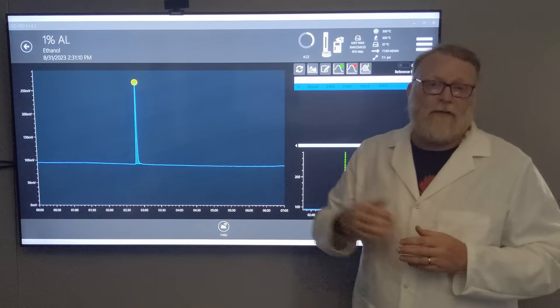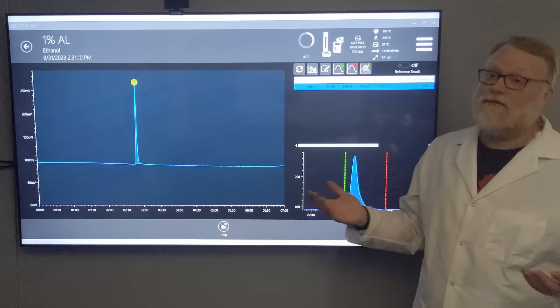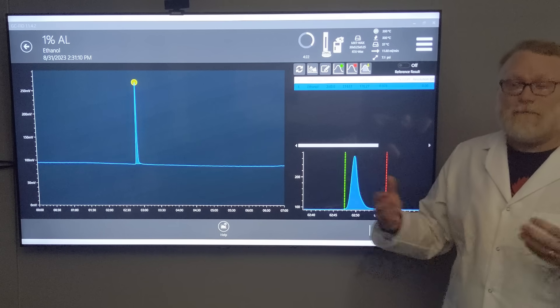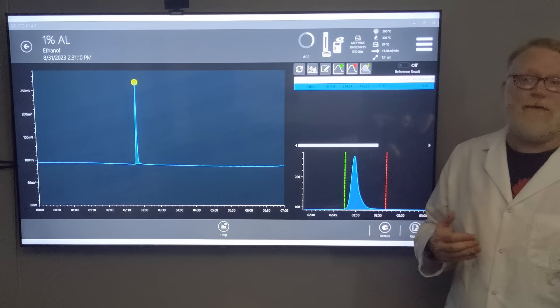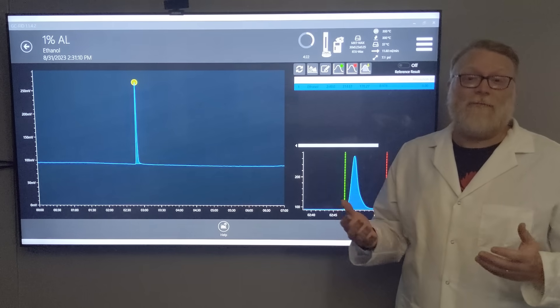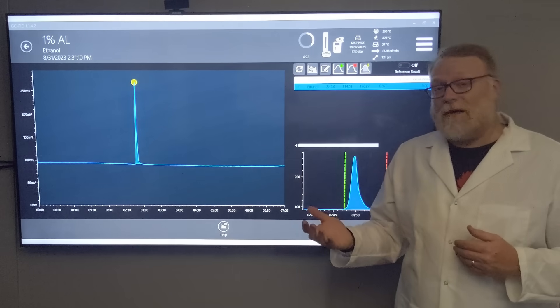What does that tell us? I diluted this beer down to 1% alcohol, and it gives me very close to 1% alcohol. Then I take out my dilution factor, because I did dilute it and we know beer is not 1%. I do the math and get 4.45% alcohol. The labeled amount was 4.5% alcohol.